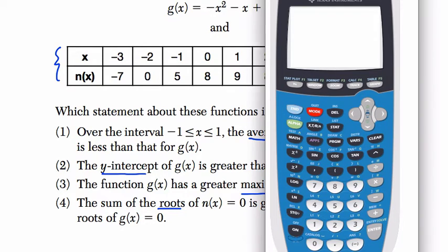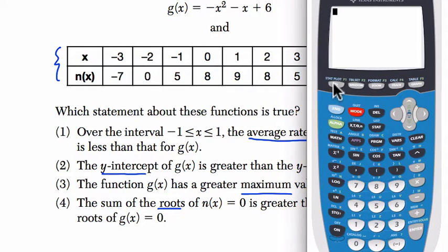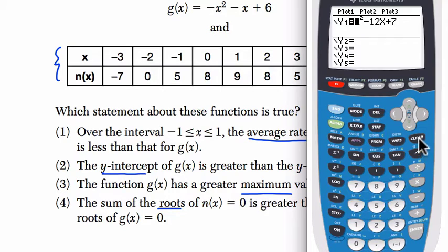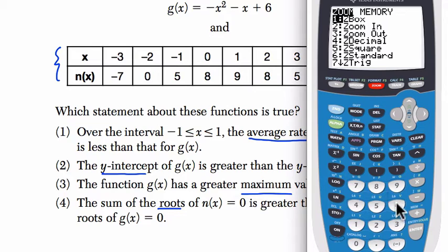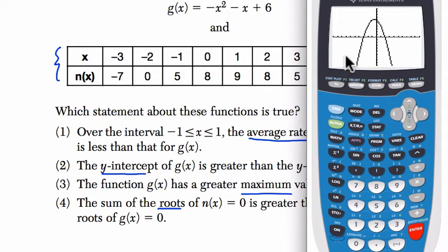So first of all, let's deal with g of x. That's the one where we have our equation. Go to enter it by pressing the y equals button, clearing off anything that's in there. Negative, this is the negative button, x squared, press right, minus x plus 6. So we enter this and then we graph it.